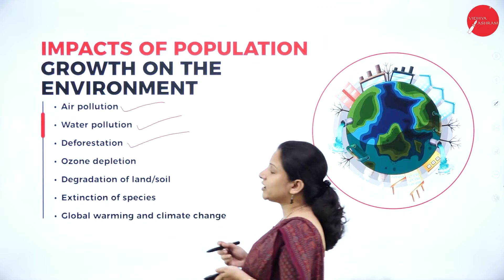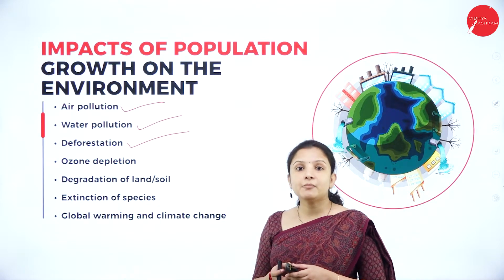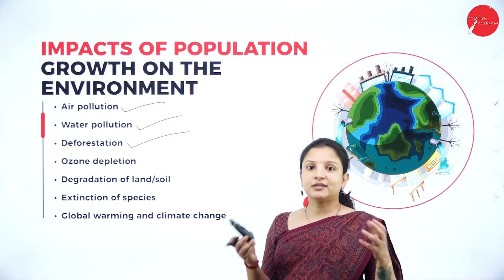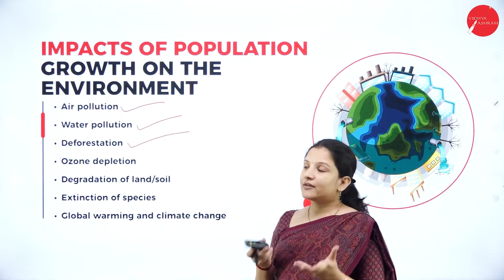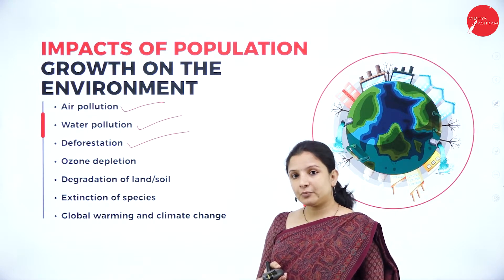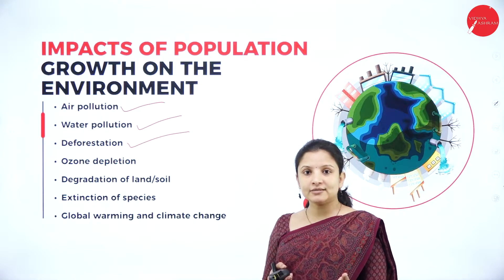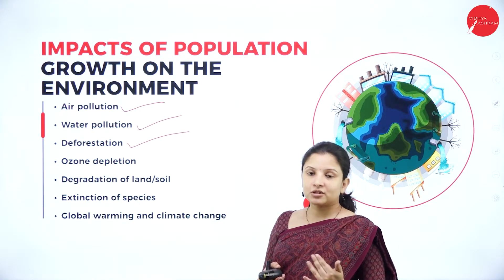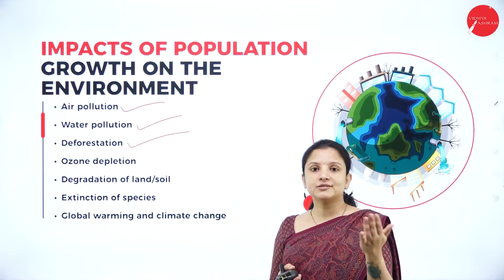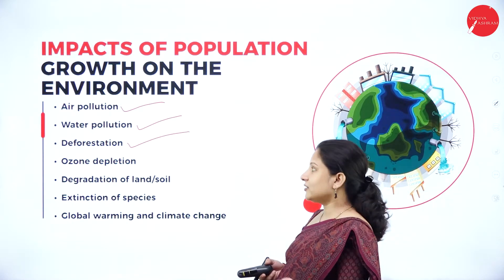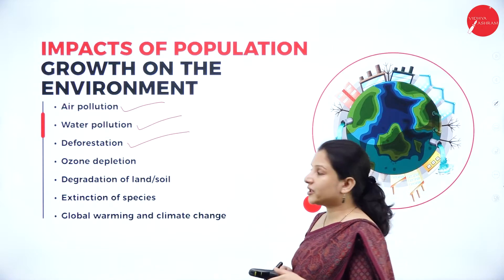Next, it will lead to deforestation. As the number of people in a country increases, there will be demand for space. The number of houses, infrastructure, and roads tend to increase, requiring a lot of land area. People will start cutting down or clearing forests so that the land can be used for agriculture, transportation, building roads, houses, schools, colleges, institutes, and industries. Therefore, deforestation is one of the major threats to the ecosystem because of population growth.